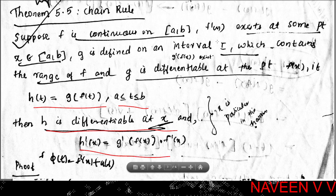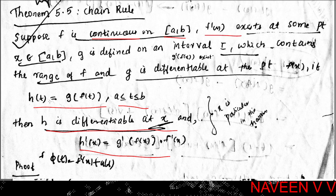The chain rule applies when f is defined on closed interval [a,b], f is differentiable at point x, and g is defined on an interval containing f(x) and differentiable at the point f(x). Then the new composite function h = g∘f is differentiable at x.